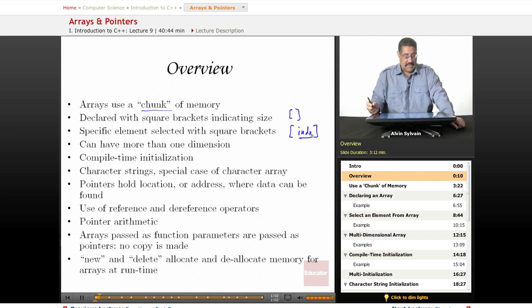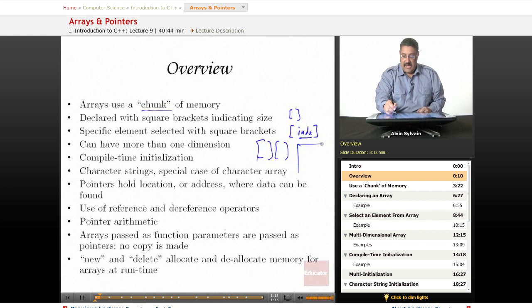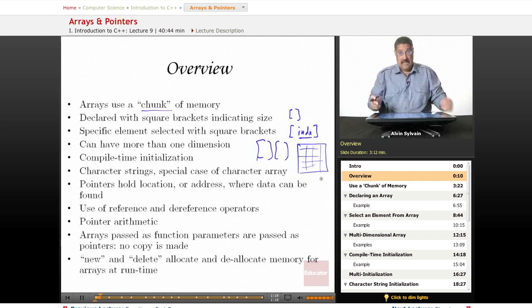They can be multi-dimensional. You can have a grid where you've got two square brackets which indicates a two-dimensional array, or you can have a three-dimensional array with three sets of square brackets, as many as you need.